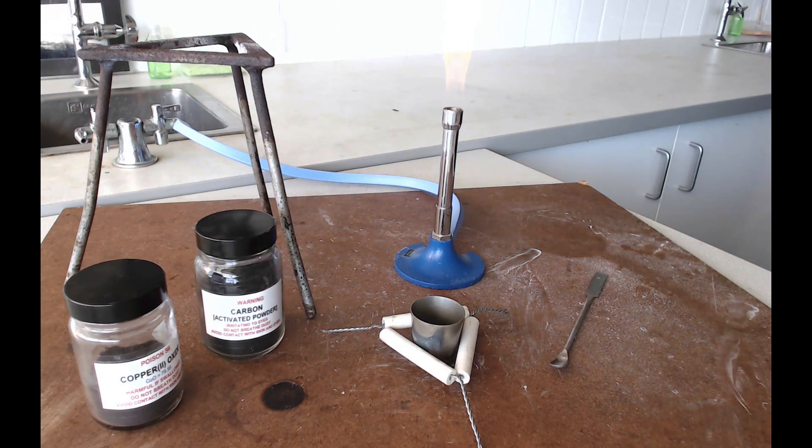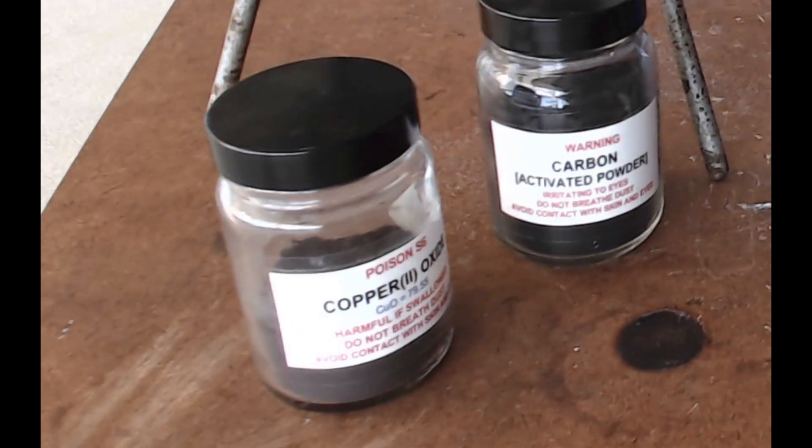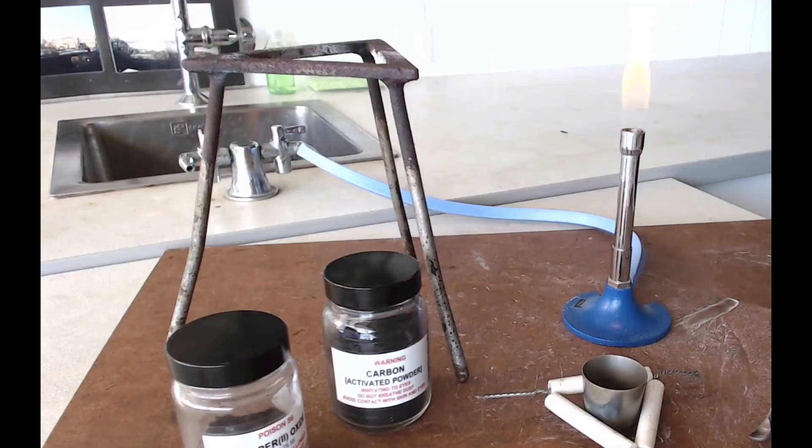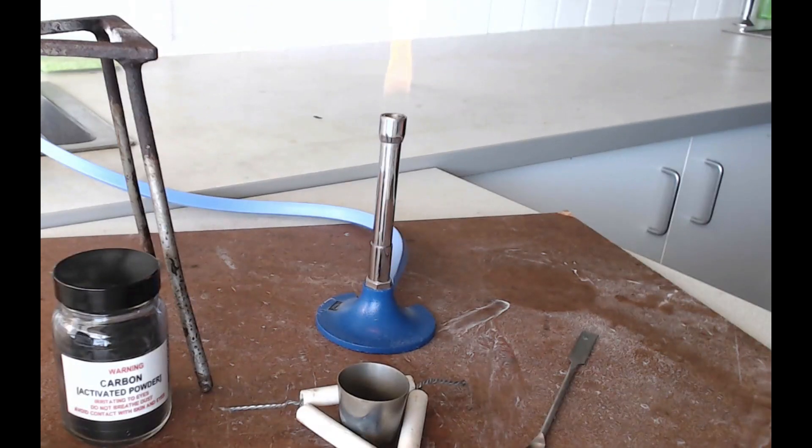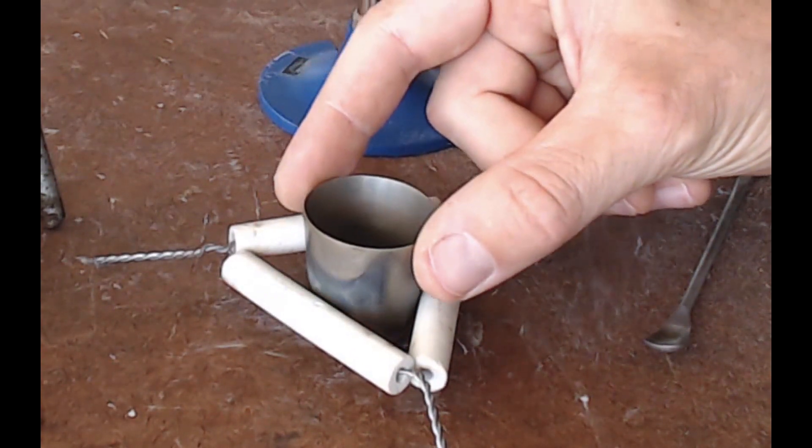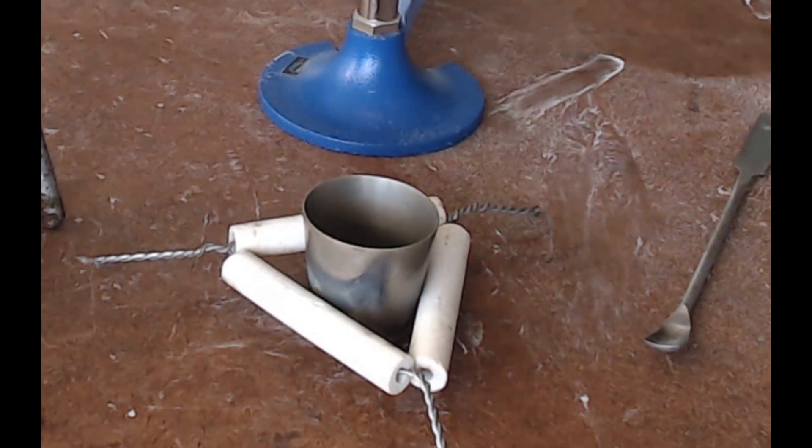For this experiment you need some copper oxide powder, some charcoal powder or powdered carbon, you need a tripod, you need a Bunsen burner, a pipe clay triangle which you're going to stand your crucible in. So you need a crucible and you need a spatula.